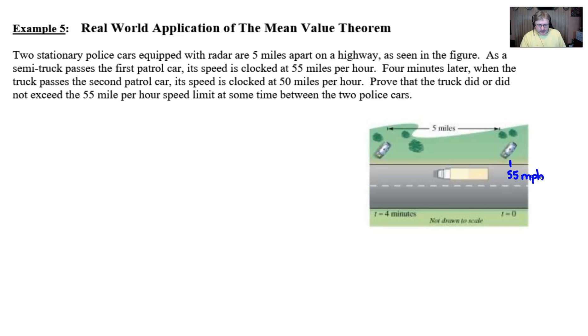Four minutes later, that same truck passes a second patrol car and is clocked at 50 miles per hour. Prove that the truck either did or did not exceed the 55 mile per hour speed limit at some time between the two police cars.